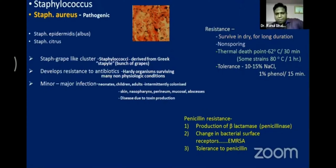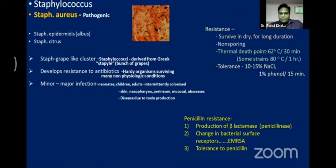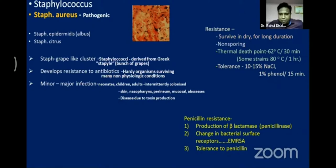This organism is gram positive, and for gram-positive organisms, antibiotics like penicillin can be used, but this organism has resistance to penicillin. This is due to the release of beta-lactamase — also called penicillinase — by the organism, and also due to changes in bacterial surface receptors. This is why MRSA (methicillin-resistant Staphylococcus aureus) strains are formed.